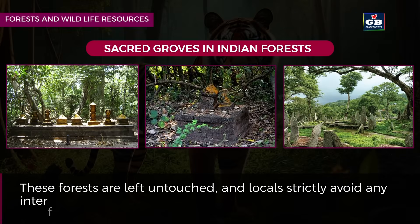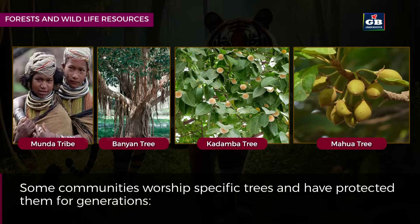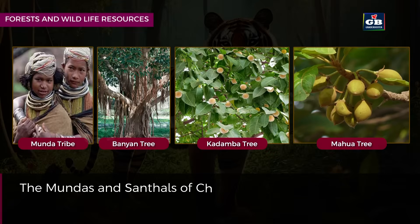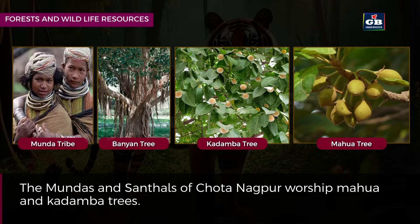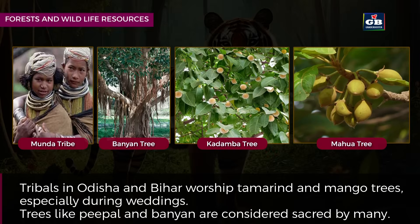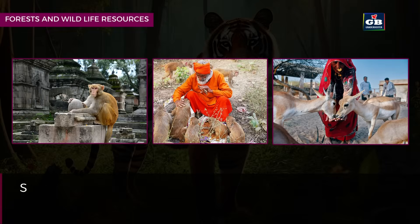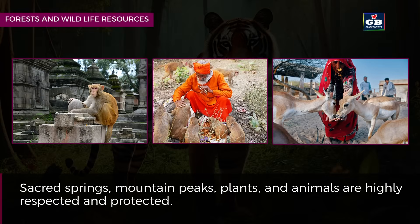These forests are left untouched and locals strictly avoid any interference with them. Some communities worship specific trees and have protected them for generations. The Mundas and Santals of Chota Nagpur worship Mahua and Kadamba trees. Tribals in Odisha and Bihar worship tamarind and mango trees, especially during weddings. Trees like peepal and banyan are considered sacred by many. Indian society, with its diverse cultures, has many traditional ways of conserving nature. Sacred springs, mountain peaks, plants and animals are highly respected and protected.